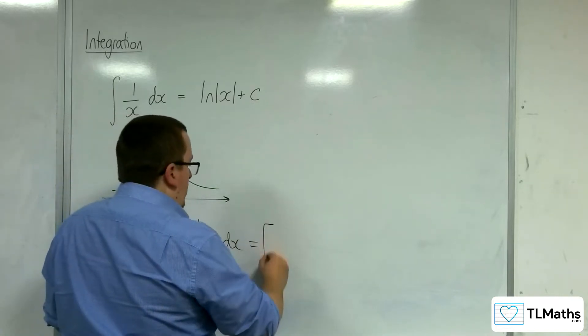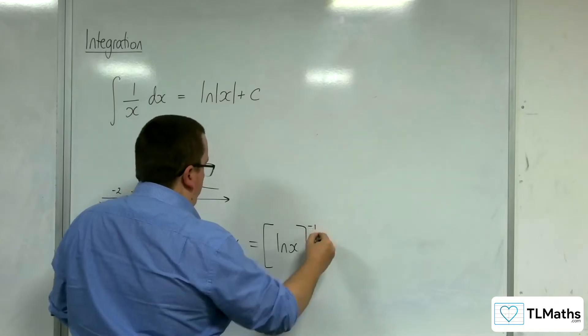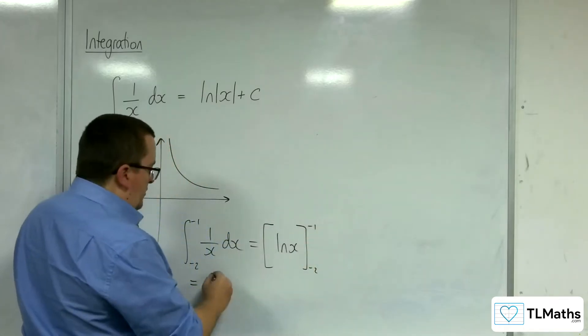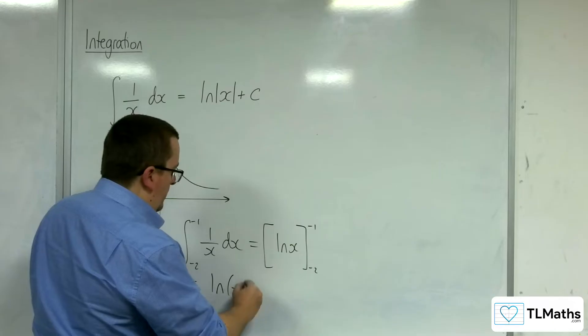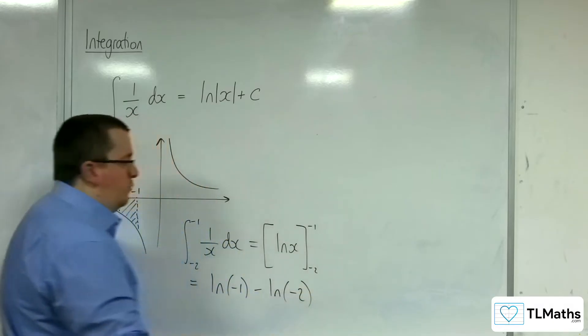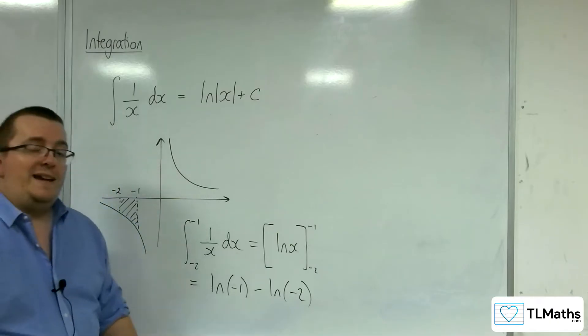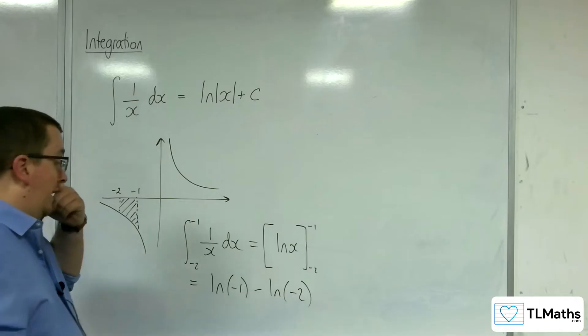Then we would integrate that to log of x between minus 2 and 1, and then we would substitute in the negative 1, and then substitute in the negative 2. And this is where the problem arises, because we can't take the natural logarithm of a negative number.